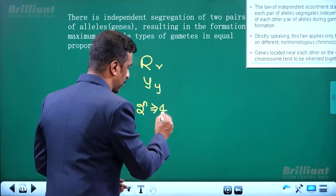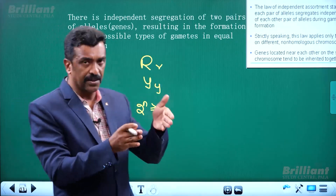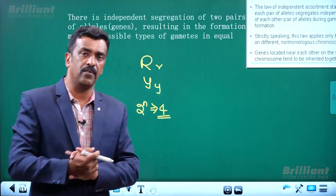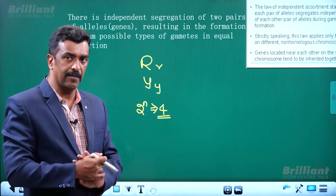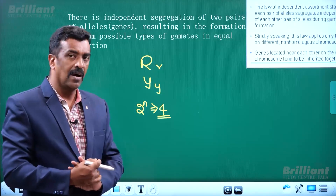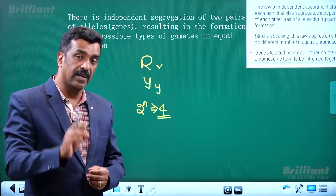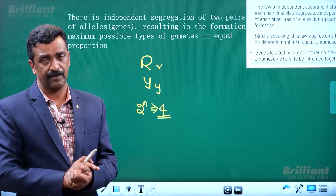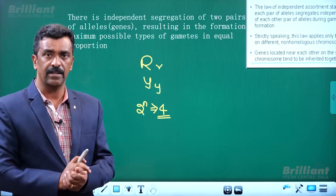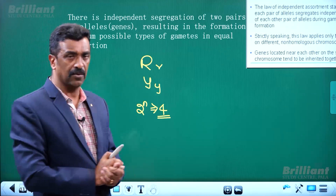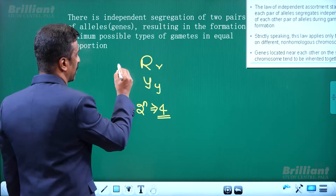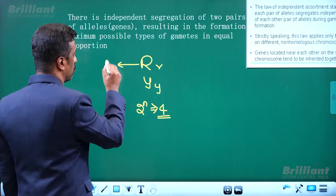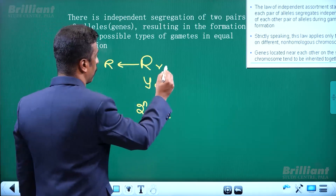The number of gamete types is 2 raised to n. For one gene — 2 raised to 1 — the maximum type of genotype is formed. The first pair is one genotype type, and the smaller genotype type.